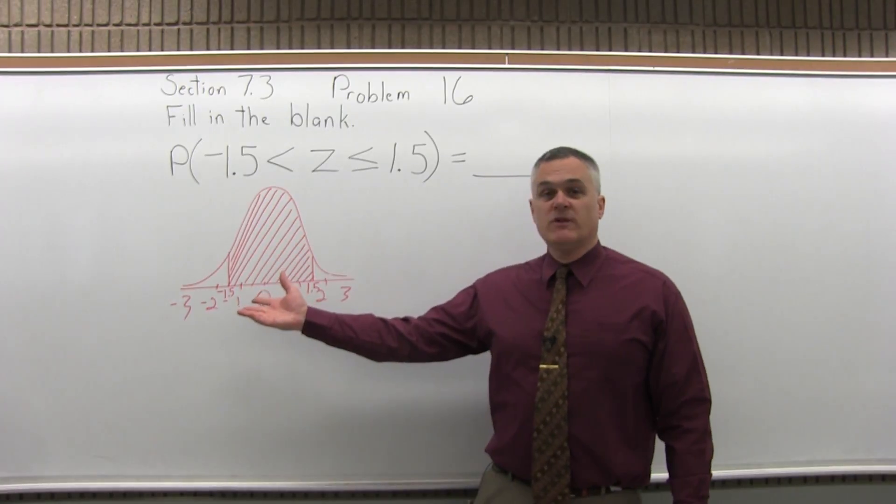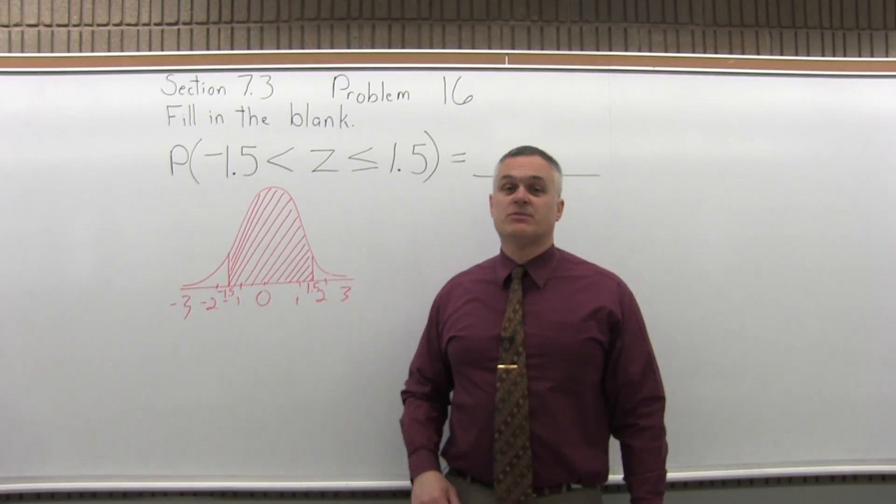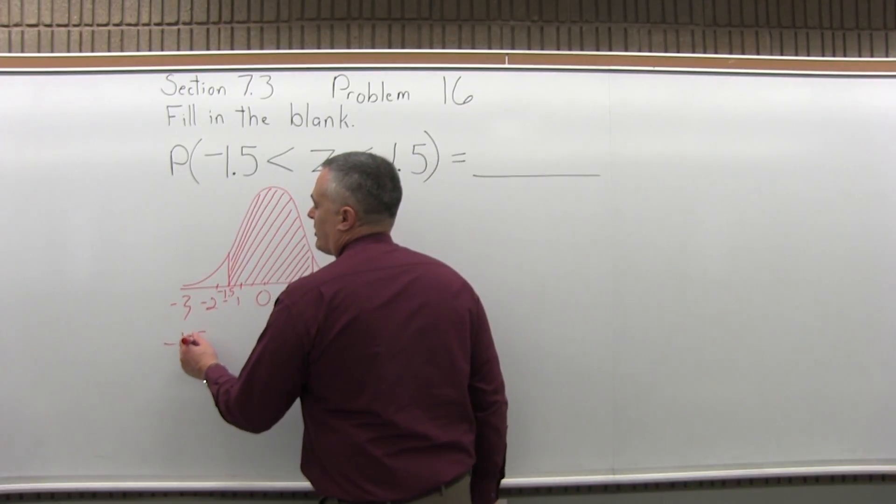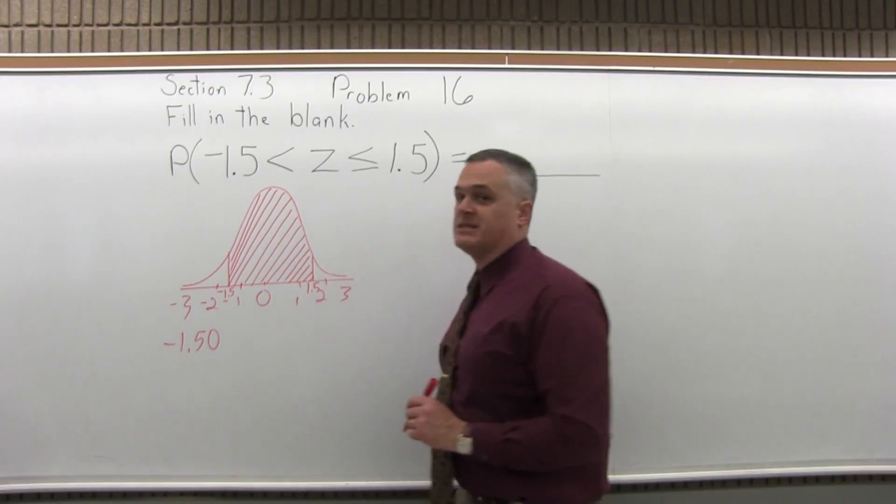So I'll start with the negative 1.5. Step 1, write the number to look up so that it has two places after the decimal. So it's written as negative 1.50, to give it two places after the decimal.